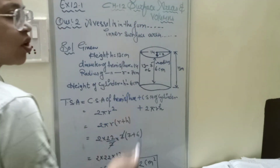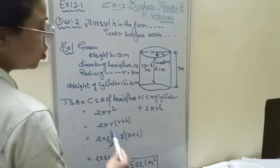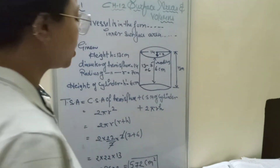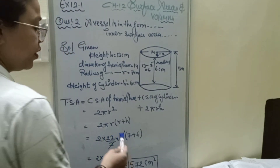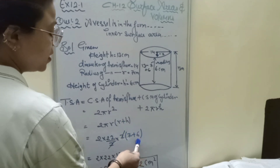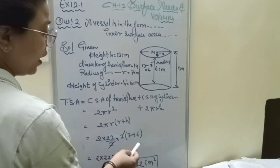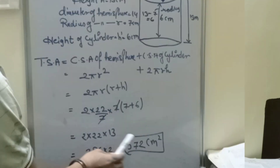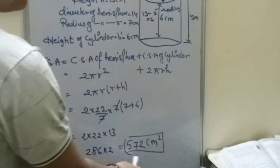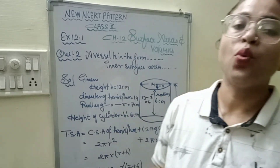The curved surface area of the hemisphere is 2πr² and the curved surface area of the cylinder is 2πrh. Taking 2πr common: 2πr(r + h) = 2 × (22/7) × 7 × (7 + 6) = 2 × 22 × 13 = 572 cm². This is the complete solution to question 2 of Exercise 12.1.